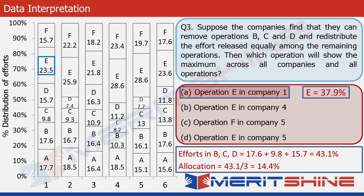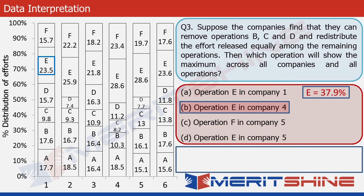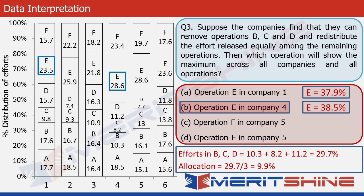Let's do likewise for operation E in company 4. The effort for B, C and D is the sum of 10.3, 8.2 and 11.2 which is 29.7%. Now to calculate the allocation for operation E, we divide this number by 3. We get 9.9. The original value for E is given as 28.6. We add 9.9 to it and get the final value of E as 38.5%.